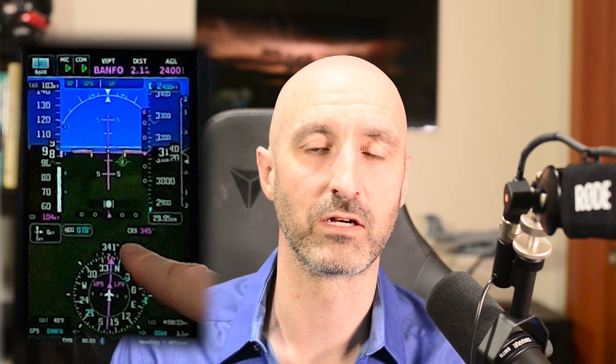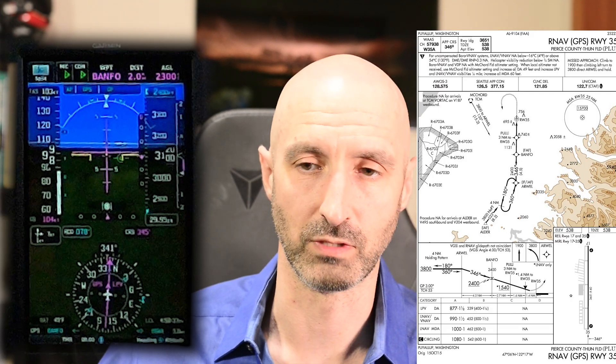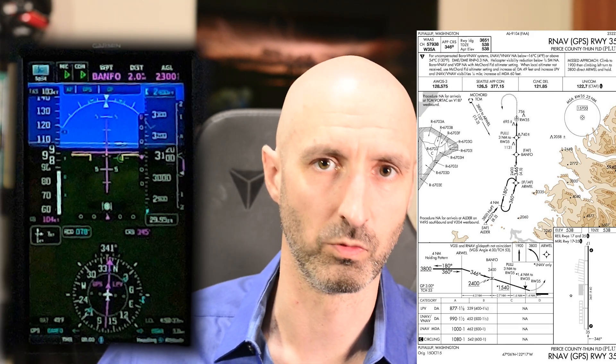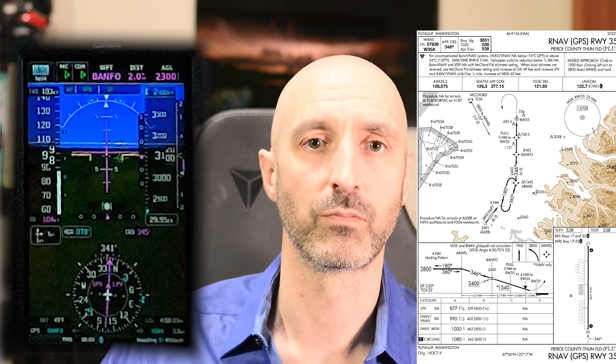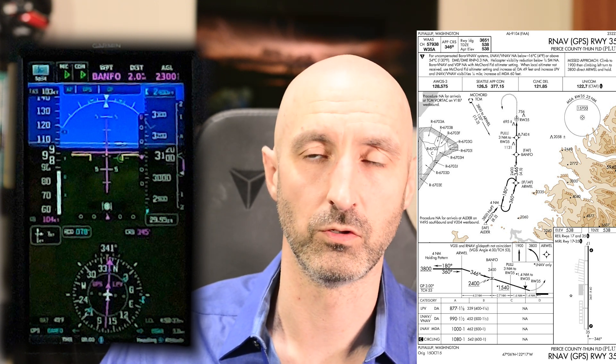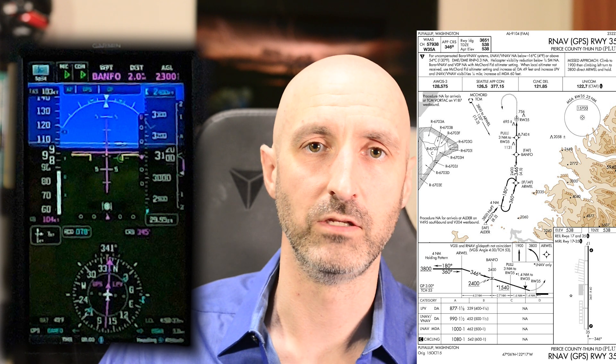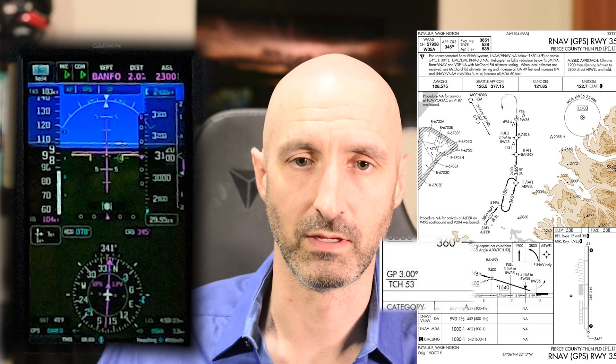Here we've got the flight path indicator coming up over the threshold. What's super cool about the flight path indicator on an approach is that you can actually put it on the glide slope indicated on an approach plate. Here's the actual approach plate for Thun Field, which is where I'm shooting this approach, and you can see it's a three degree glide path.